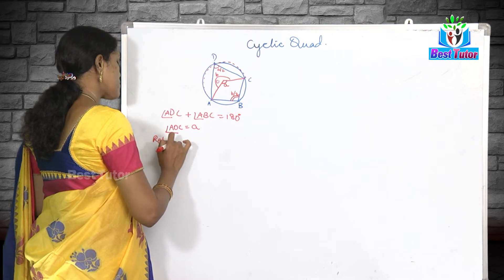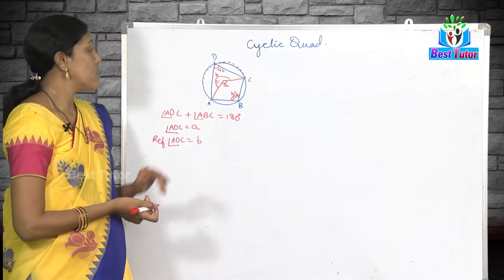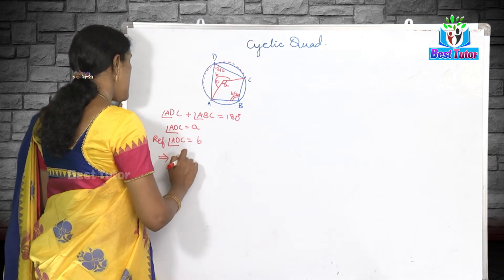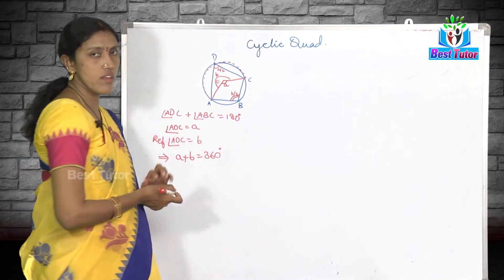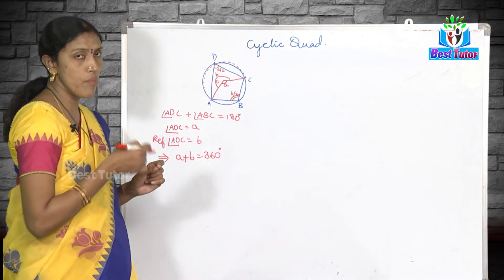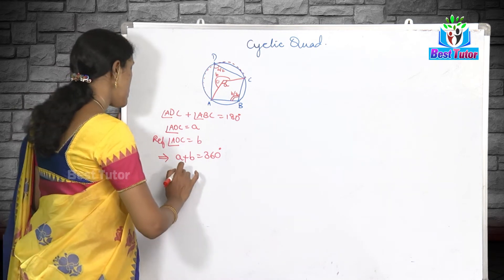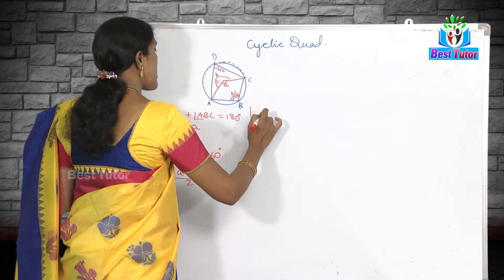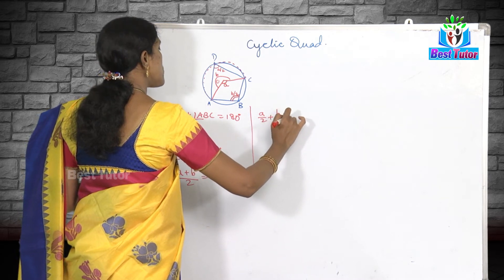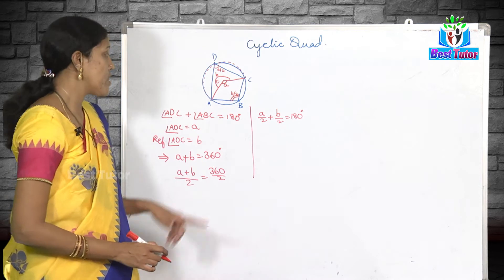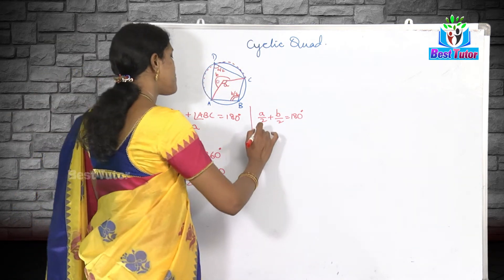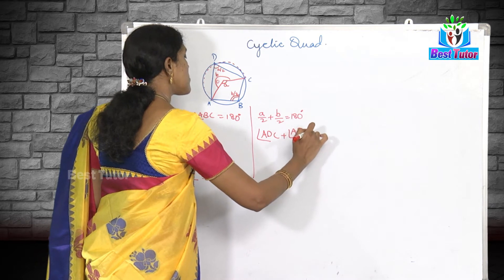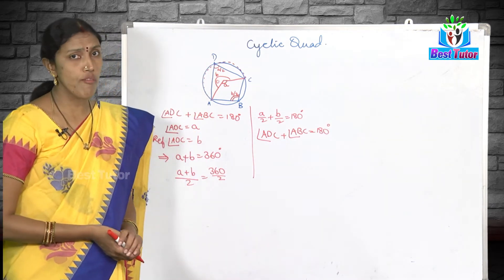Angle AOC equals 'a' and reflex angle AOC equals 'b'. The sum of angles around a point is equal to 360 degrees, so a plus b equals 360 degrees. Dividing the entire equation by 2: a/2 plus b/2 equals 180 degrees. But a/2 is angle ADC and b/2 is angle ABC. Therefore, angle ADC plus angle ABC equals 180 degrees — we have proved that opposite angles of a cyclic quadrilateral are supplementary.